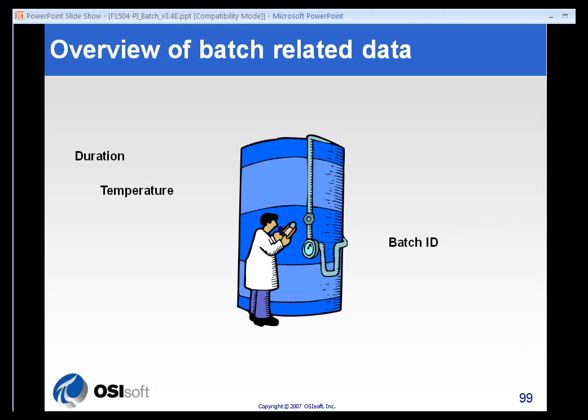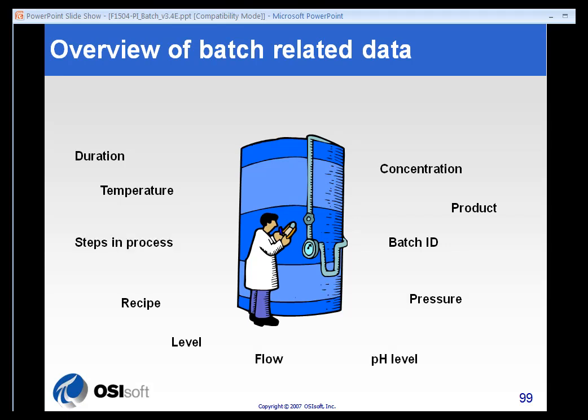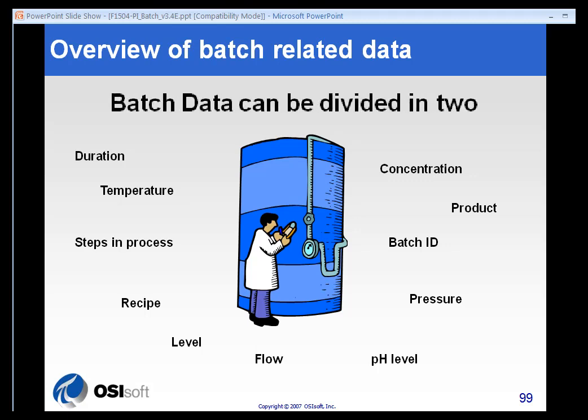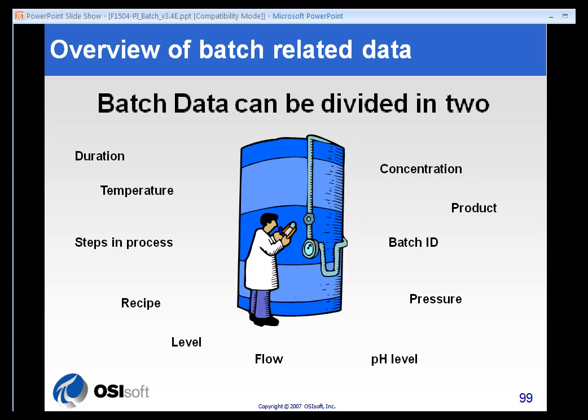First of all, let's take a look at a little bit about batch and what kind of data surrounds a batch process. Obviously there's duration, and there might be temperatures and pressures. There certainly are batch IDs and products being produced.